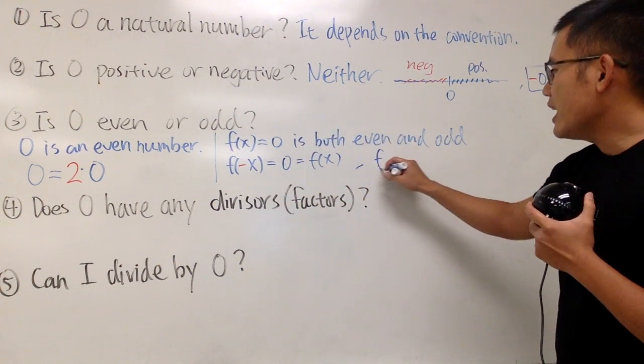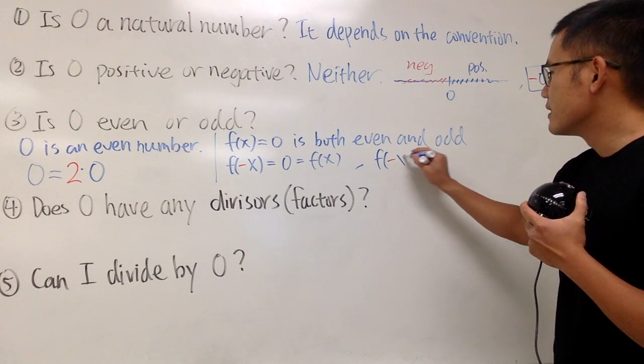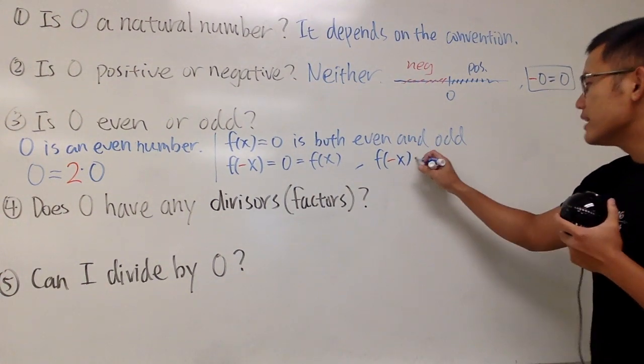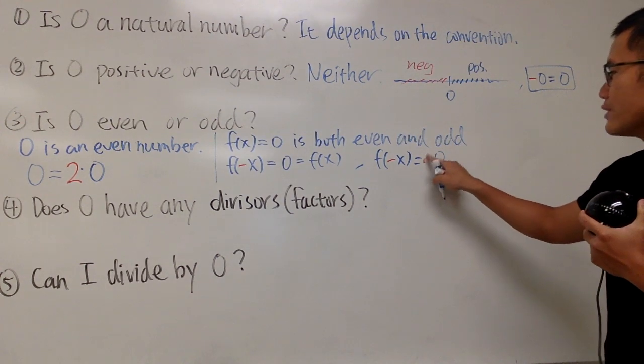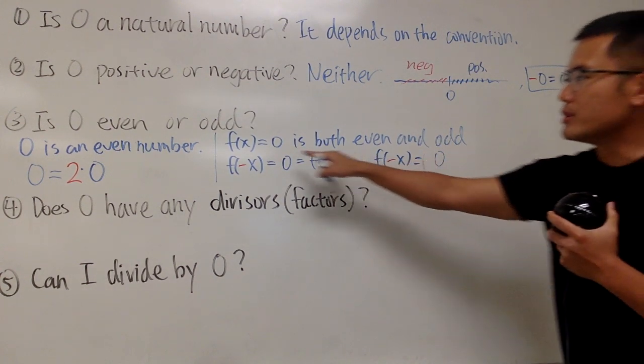Similarly, if you check f of negative x, can we write this as negative 0? Sure, because technically I should do this. This is equal to 0 like that.